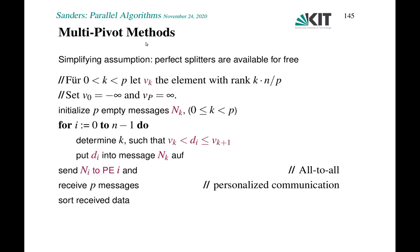Let's start with a simplifying assumption. We want to generalize quicksort to use multiple pivots at the same time. As a simplification, let's assume we know perfect p-pivots, meaning we have pivots v_i — k of them — where v_k is the element with rank k times n over p. We also add v_0, smaller than all elements, and v_p, larger than all elements, for uniform notation.